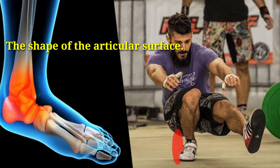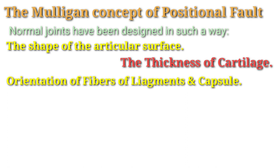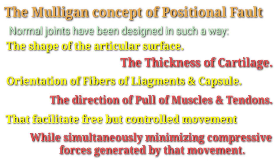Mulligan focuses on how normal joints are designed, in that the shape of the articular surfaces, the thickness of the cartilage, orientation of the fibers of ligaments and capsules, the direction of the pull of muscles and tendons, facilitate free but controlled movement, while simultaneously minimizing the compressive force generated by that movement.